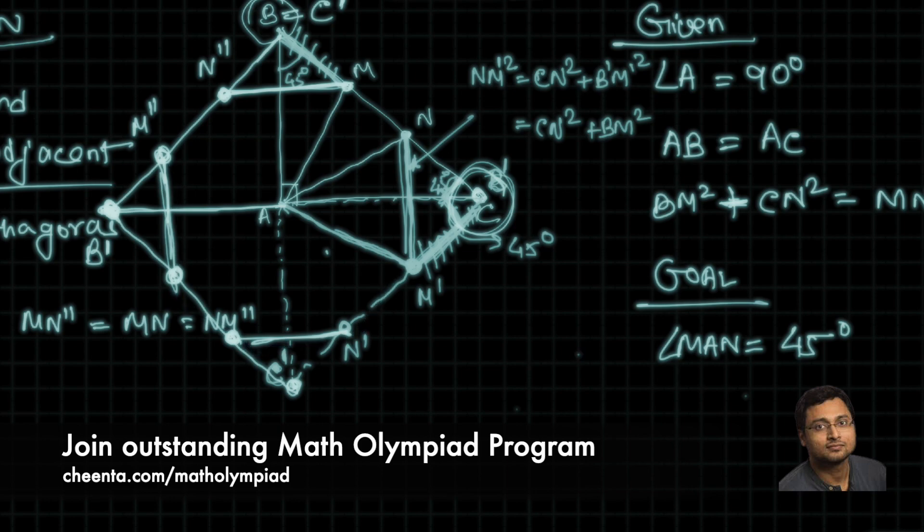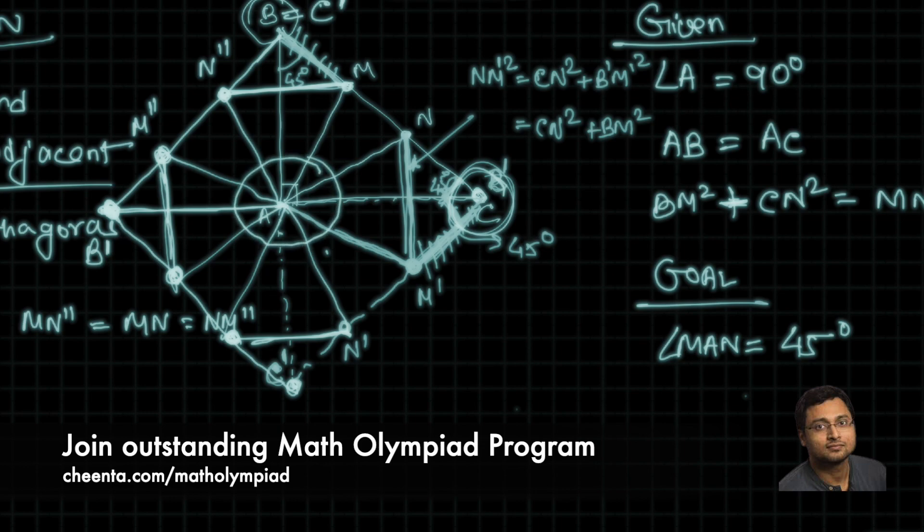And, that means that each, the central angle will get divided into eight equal parts. The central angle being 360 degrees will be divided into eight equal parts, meaning that each part is 45 degrees. So, M, A, N is one such part. MAN is one such part. So, that must be 45 degrees. So, see how beautifully we could use rotation in the context of this particular problem.